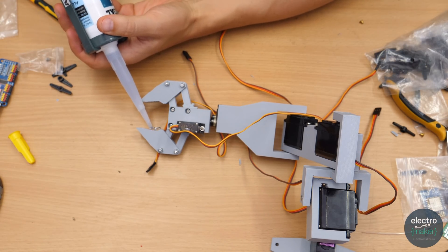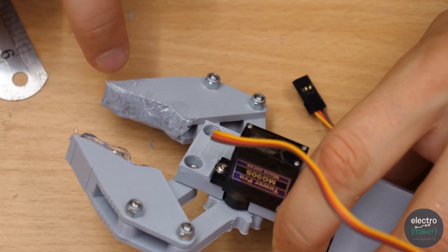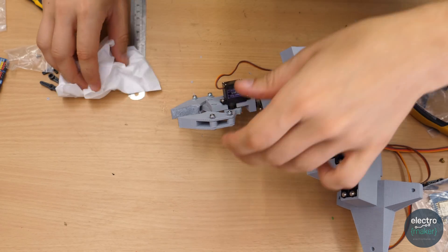After everything was mounted I wanted to give the gripper more grip. Instead of designing and printing some rubber parts I simply took a bit of silicone sealant and shaped it in place.